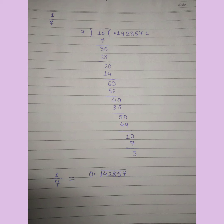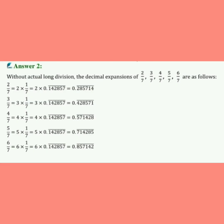यह वाला answer already question में दे रखा है। अब 2/7, 3/7, 4/7, 5/7 और 6/7 को long division method से नहीं करना है। बिना long division method के decimal में कैसे convert करते हो, वो बताना है। अगर exam में answer given न हो, तो एक बार long division से 1/7 निकालना होगा, और फिर बाकी rational forms को decimal में convert करना है।